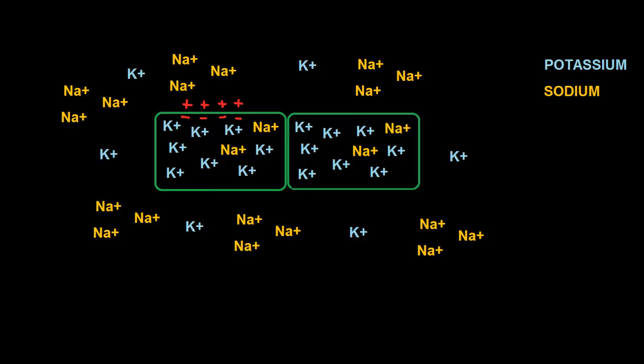Now for reasons all its own, one SA node cell, about once every second, about 60 to 100 times per minute, opens up some channels in the cell wall that will allow for some movement of these ions. Before the movement begins, remember that the inside is a bit negative compared to the outside. When the channels open up, diffusion takes place.